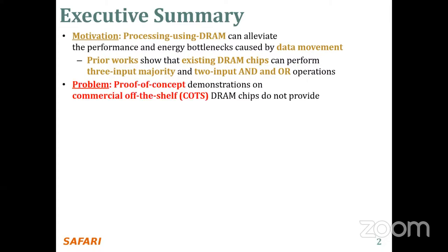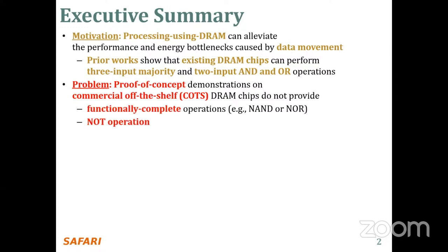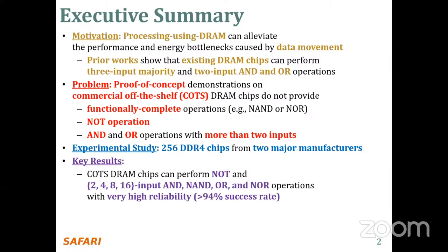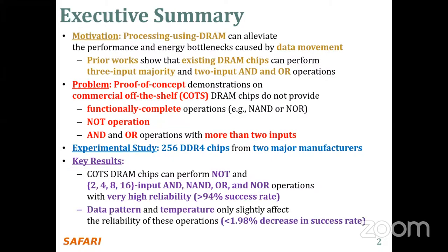However, those proof-of-concept demonstrations do not provide functionally complete operations such as AND, OR, NOR, NOT operations, and more than two-input AND and OR operations. In this study, we test a total of 256 DDR4 DRAM chips from two major manufacturers. We observed that off-the-shelf DRAM chips can perform NOT and 2, 4, 8, 16-input AND and OR operations with very high reliability — more than 94% success rate — and data pattern and temperature only slightly affect the reliability, less than 2% decrease in success rate.